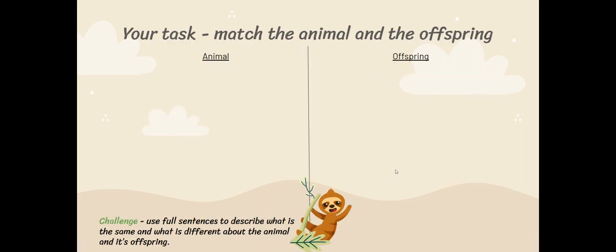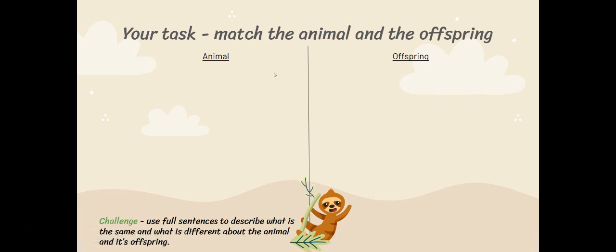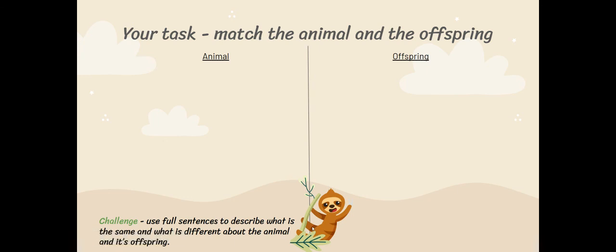So your task today is going to be to match the animal and the offspring. I've created a Google Slide where you will see some pictures of animals and pictures of offspring. You need to write them in your book by drawing a line down the middle and giving a heading 'animal' and a heading 'offspring'. You need to identify the animal and the offspring and classify them into the right column. Your challenge is to use full sentences to describe what is the same and what is different about the animal and its offspring.